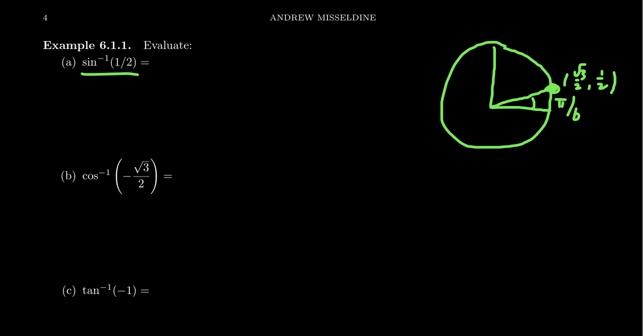If you want to do sine inverse of 1/2, what does that equal? When I think of inverse trigonometric functions, you have to think of it as an angle. Sine inverse of 1/2 means you want the angle which, when put into the sine function, gives you the ratio of 1/2. Whenever you see an inverse trig function, I like to denote it as theta — my go-to variable for angles. Because it's an inverse function, we can move sine inverse to the side and solve the equation: 1/2 = sine of theta.